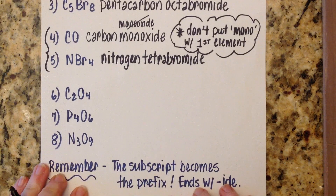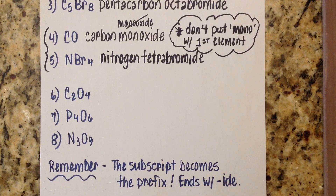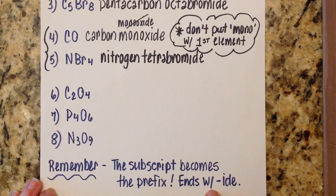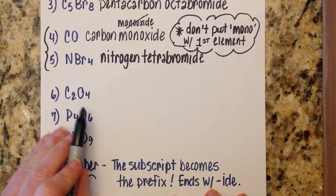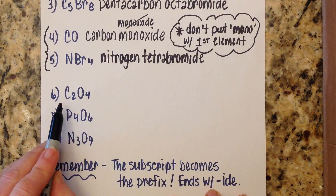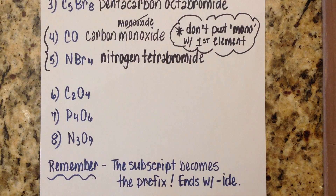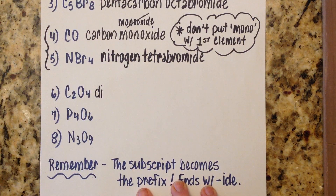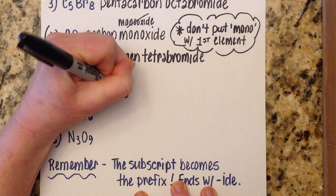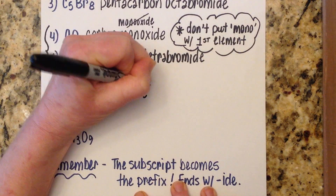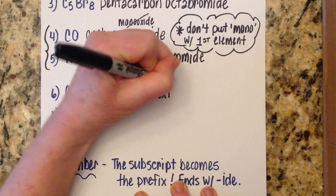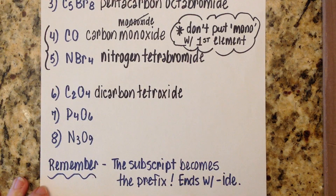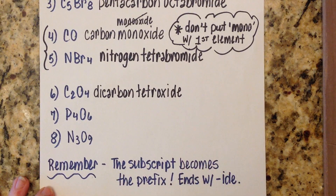Don't put mono with the first element — worth writing down more than once. Numbers six, seven, and eight draw your attention to the A-O and O-O vowel rule. Number six: two carbons and four oxygens. We call this dicarbon tetroxide — technically dropping the A from tetra, so it's T-E-T-R-O-X-I-D-E. For beginning chemistry, if you get the right prefix with the right element, that's the important thing.